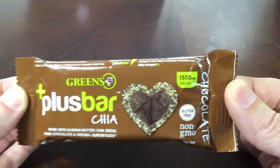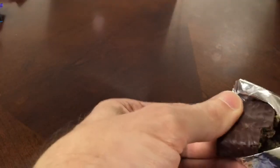This is pretty much the same bar that we reviewed before, just the Greens Plus with Chia, except this has the chocolate coating on it, as you can see.